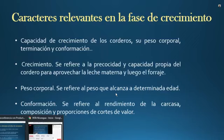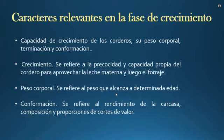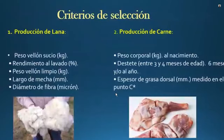El peso corporal se refiere al peso que alcanza el animal a determinada edad. Es importante conocer toda su curva de crecimiento y comparar todos los animales. Dentro de una granja, el productor puede identificar qué hembra es la mejor: la que tiene mejor peso, mejor crecimiento y ha sido más prolífera. La conformación se refiere al rendimiento del corte de valor, lo cual es relevante para aquellos productores que venden la carne de oveja en cortes y conocen la demanda del mercado.